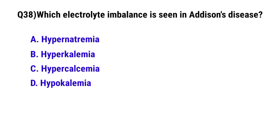Question number 38: Which electrolyte imbalance is seen in Addison's disease? The correct option is B: Hyperkalemia.